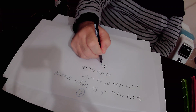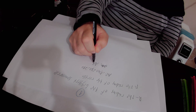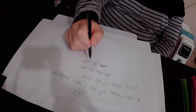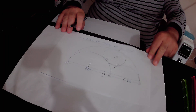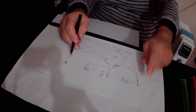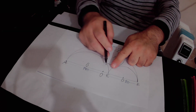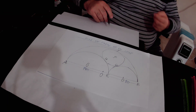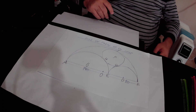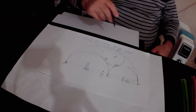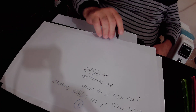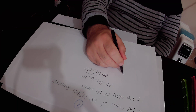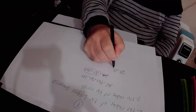Line segment AE is actually the diameter of the biggest semi-circle. And therefore, the diameter of the biggest semi-circle equals 2 times capital R. So 2 times capital R is the diameter of the biggest semi-circle.